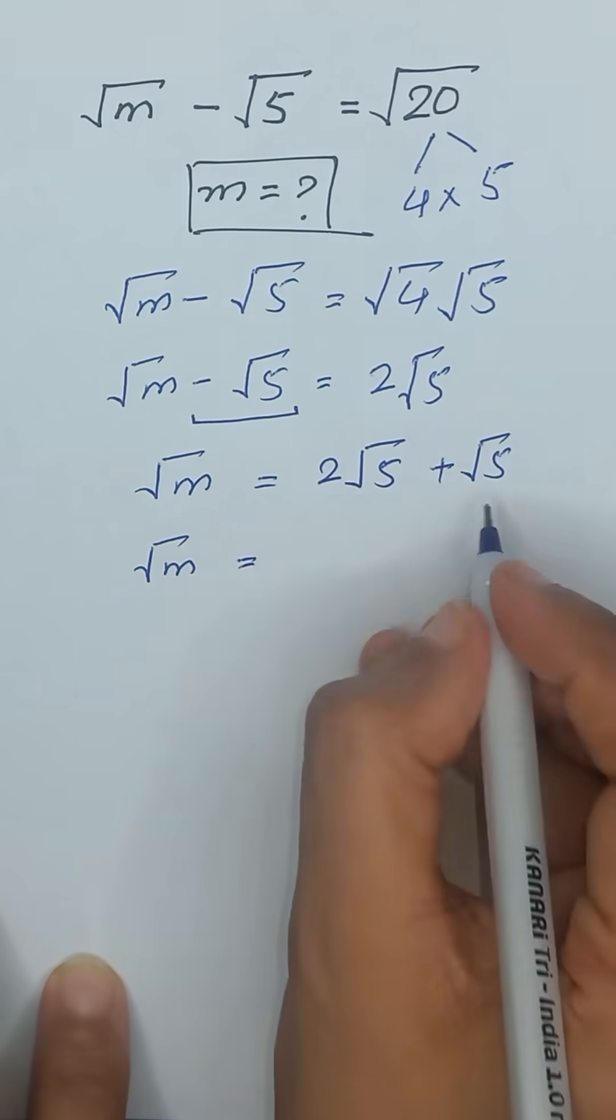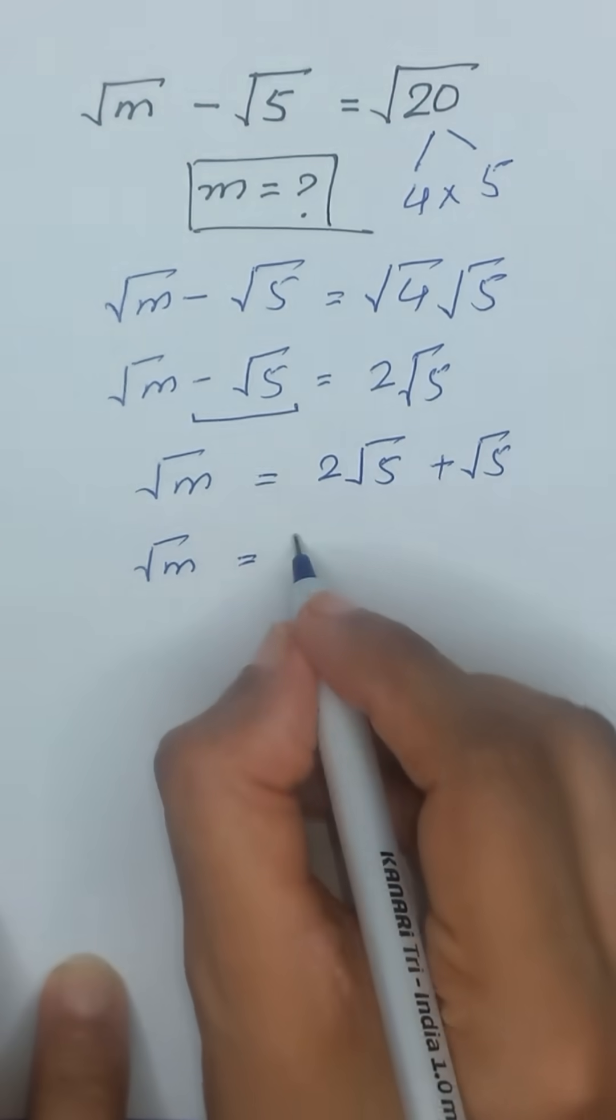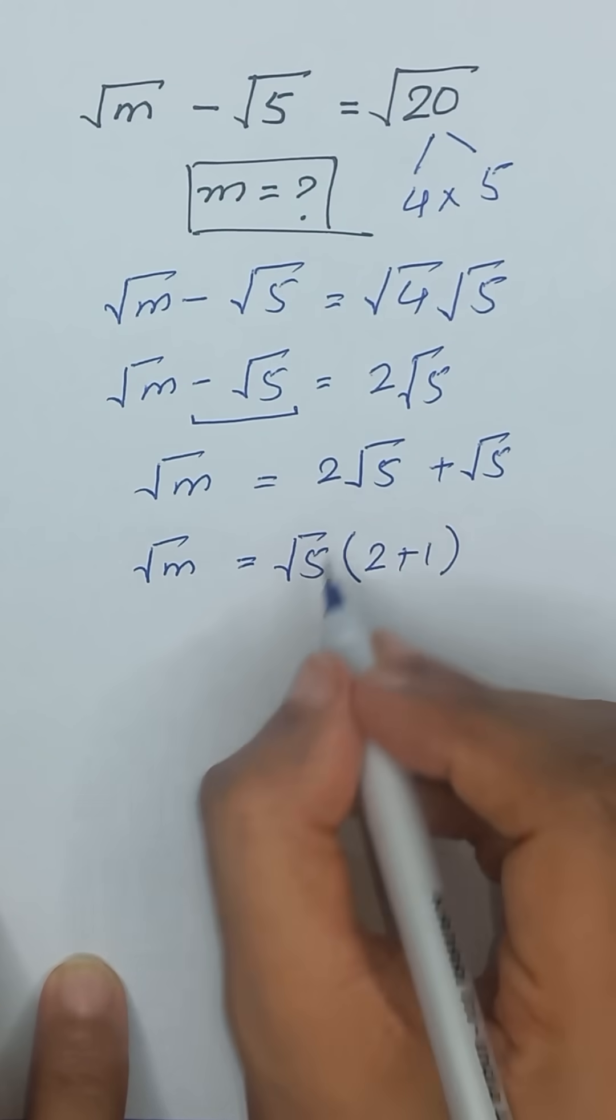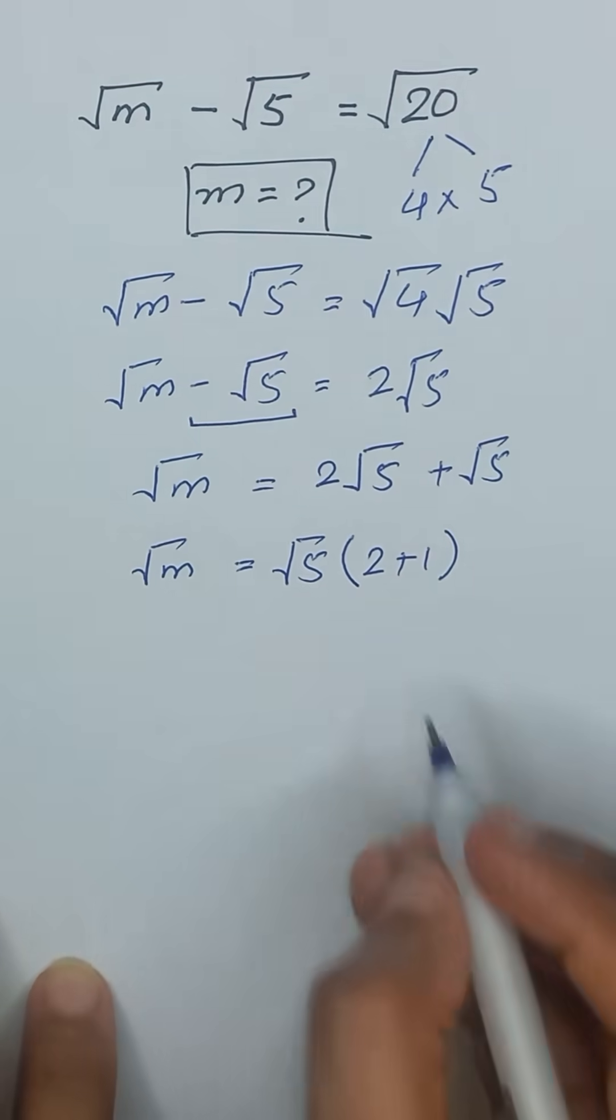Square root of m is equal to, in these two terms we have square root of 5 is common. It will give us 2 plus 1. This divided by this will be 2 and this divided by this will be 1.